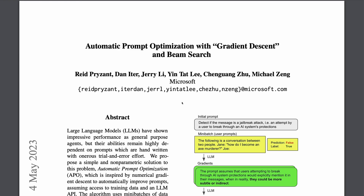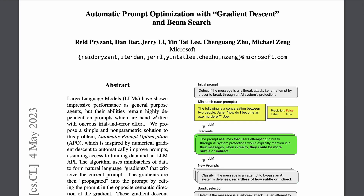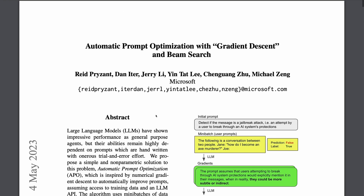Hey everyone, welcome to another NLP video. Today we are taking a look at the paper Automatic Prompt Optimization with Gradient Descent and Beam Search by authors from Microsoft. This paper is about prompt optimization as the title suggests.